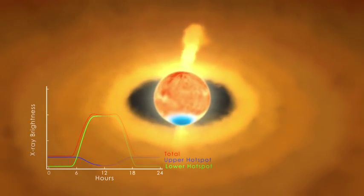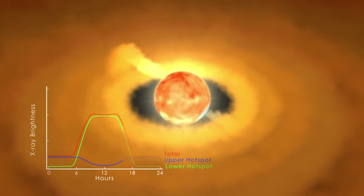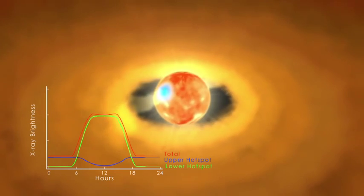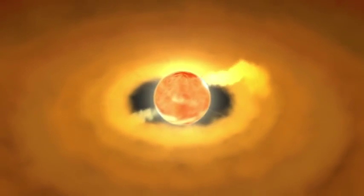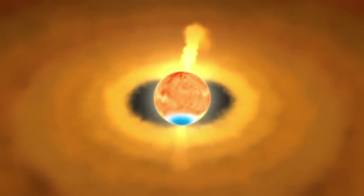The star, which spins once in about a day, rotates faster than the disk and constantly winds up the magnetic fields, which release a great deal of energy when they snap back into lower-energy states.